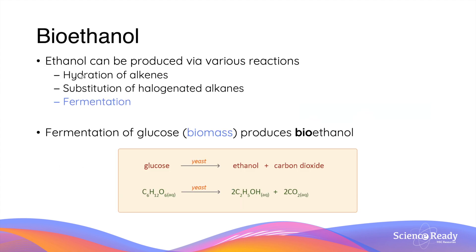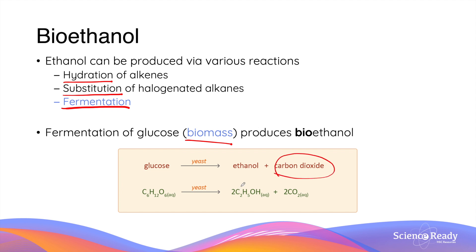In another video, we have discussed various ways ethanol can be produced. These include hydration of alkenes, substitution of halogenated alkanes, and fermentation of glucose. In this video, we will be focusing on fermentation, as fermentation of glucose — which is an example of biomass — produces bioethanol and carbon dioxide as a byproduct.